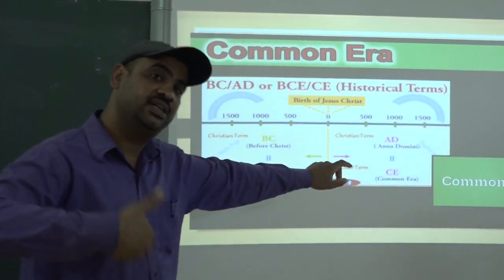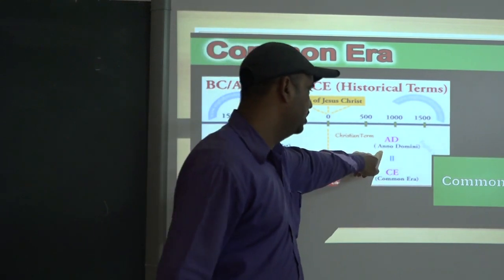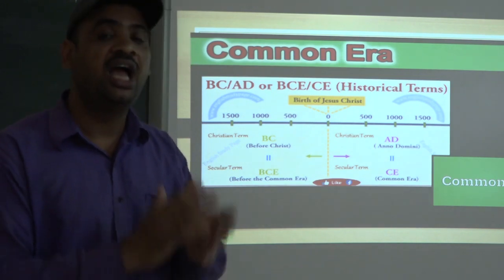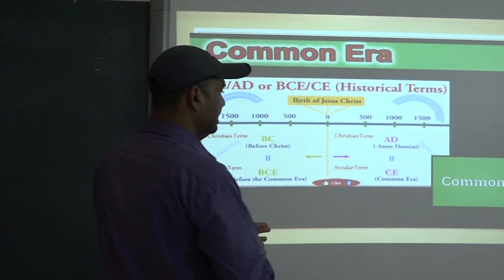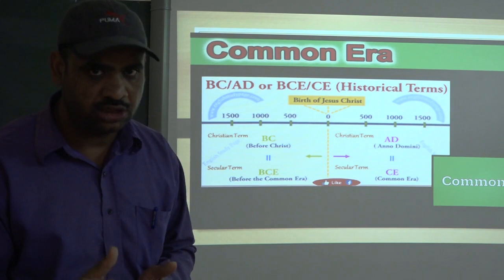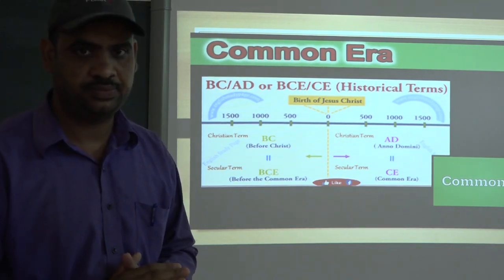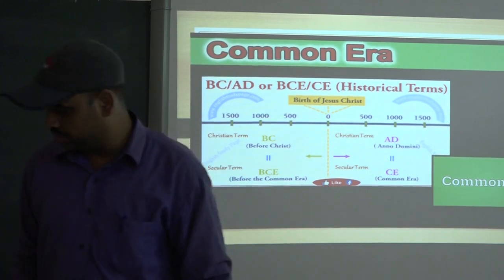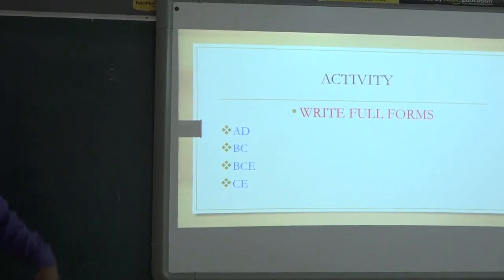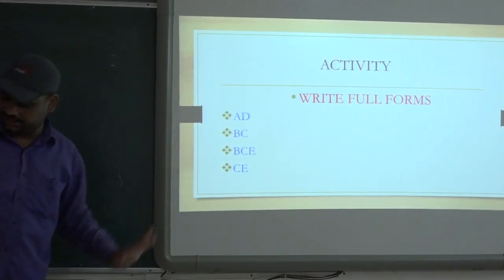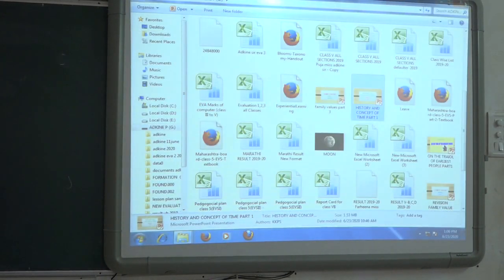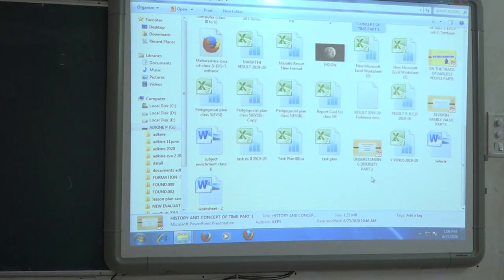The period after the birth of Jesus Christ is also given the name AD. The full form of AD is Anno Domini, which means 'in the year of the Lord.' You have an activity to do: write the full forms of AD, BC, and CE. I have a short video to show you about this, and then we will finish here.